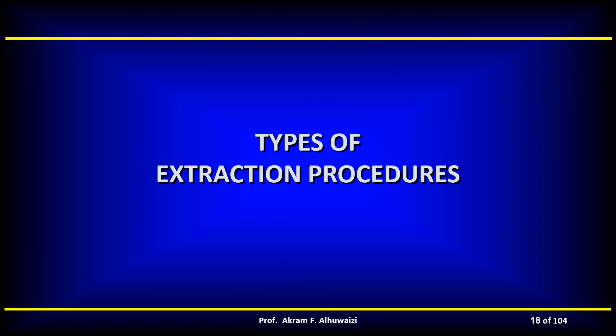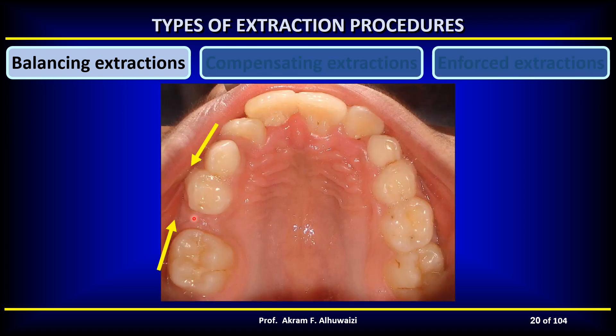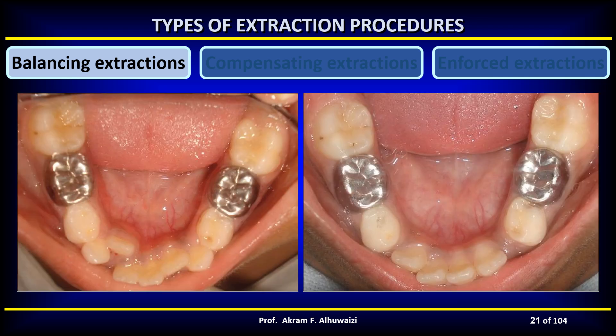There are three types of extraction procedures: balancing extractions, compensating extractions, and enforced extractions. If a tooth is removed from one side of the dental arch which is crowded, there is a tendency for the remaining teeth to move towards the extraction site — in the form of forward movement of teeth behind the space or movement of the anterior teeth across the center of the arch, resulting in asymmetry. Balancing extractions may be defined as the removal of the tooth on the opposite side of the same arch, although not necessarily the same tooth, in order to preserve symmetry.